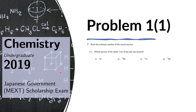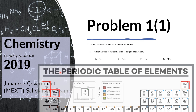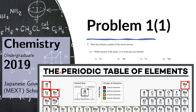If you recall the periodic table — they don't give you a periodic table in the exam — but if we had one, these elements would be in these positions. We see that the atomic numbers are 1, 2, 3, and 4. So those are the number of protons in each of those elements.